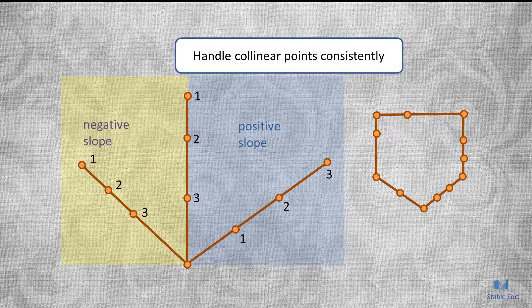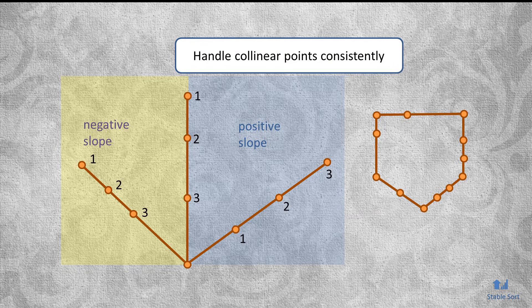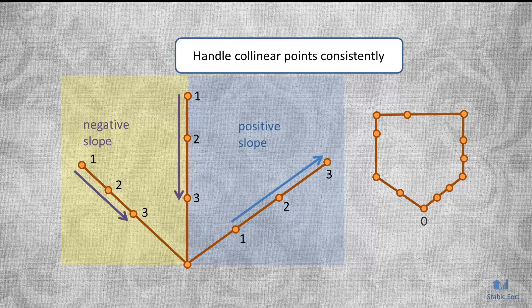The only thing to be cautious of is handling points that are collinear. Since we only want to keep the peripheral points, make sure that your comparator orders the points from left to right when the slope of a line is positive, and in reverse, when the slope is vertical or negative.